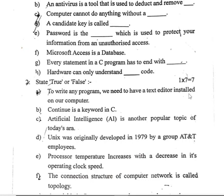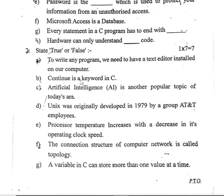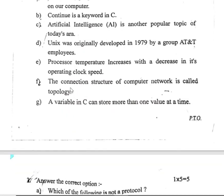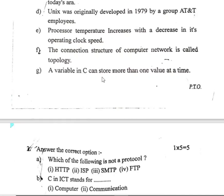Next section: True or False, questions one to seven marks. To write any program we need to have a text editor installed on your computer. 'Continue' is a keyword in C. Unix was originally developed in 1979 by a group at AT&T. Temperature increases with decreases in its operating clock speed. A variable in C can store more than one value at a time.